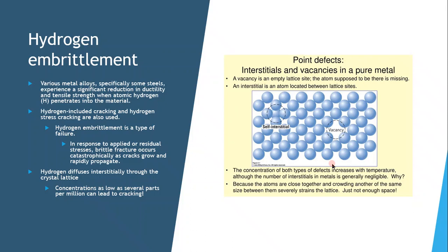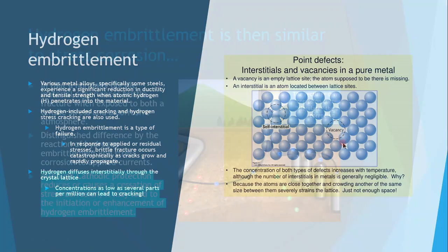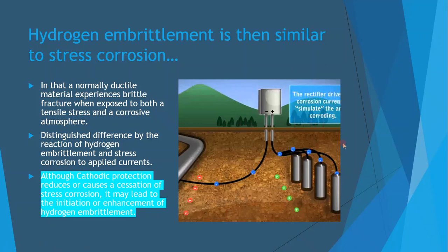Hydrogen embrittlement is where various metal alloys, specifically some steels, experience a significant reduction in ductility and tensile strength when atomic hydrogen penetrates the material — also called hydrogen-induced cracking or hydrogen stress cracking. It is technically a type of failure: brittle fracture occurs catastrophically as cracks grow and rapidly propagate. Hydrogen diffuses interstitially through the crystal lattice, and concentrations as low as several parts per million can lead to cracking.